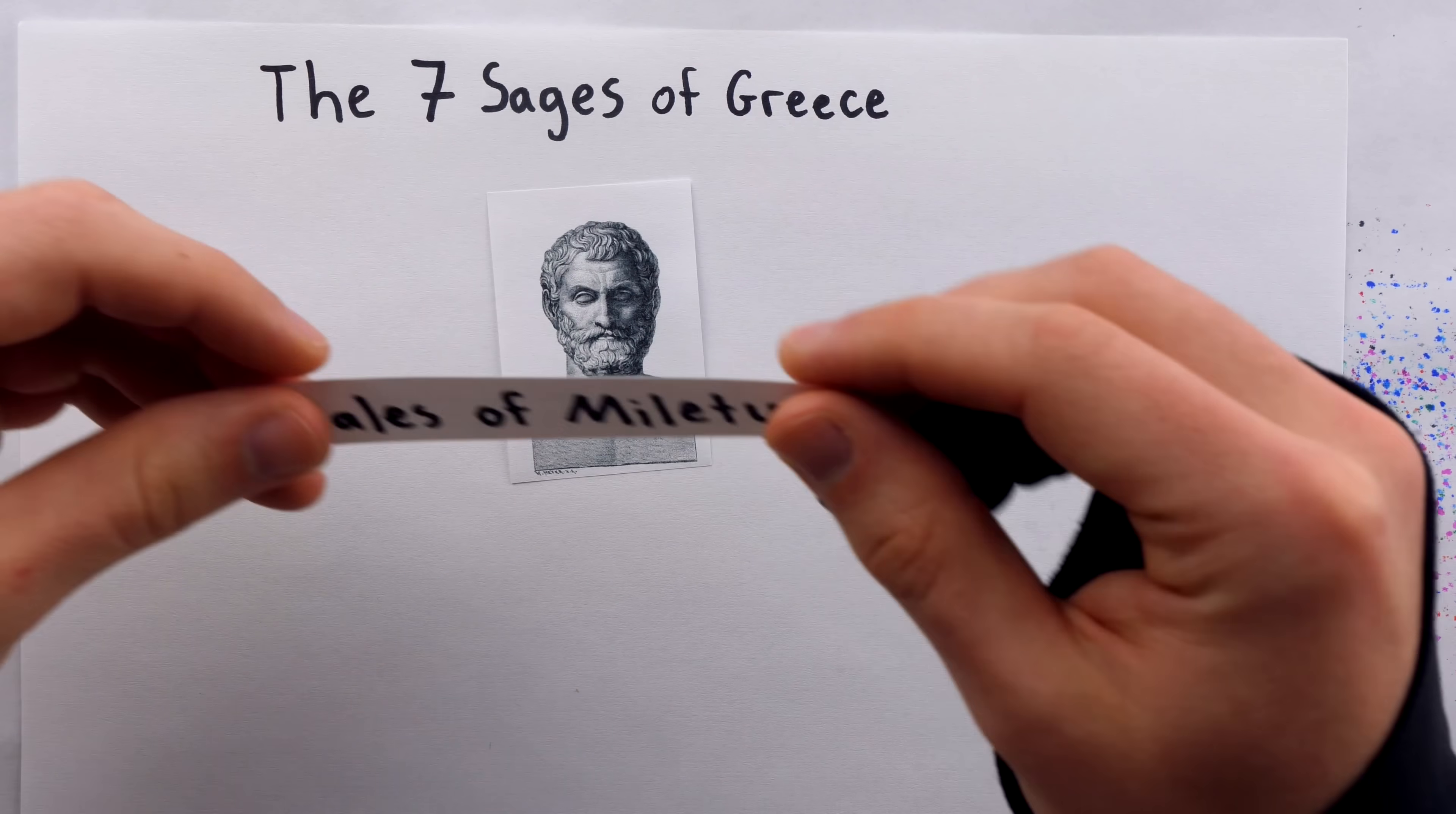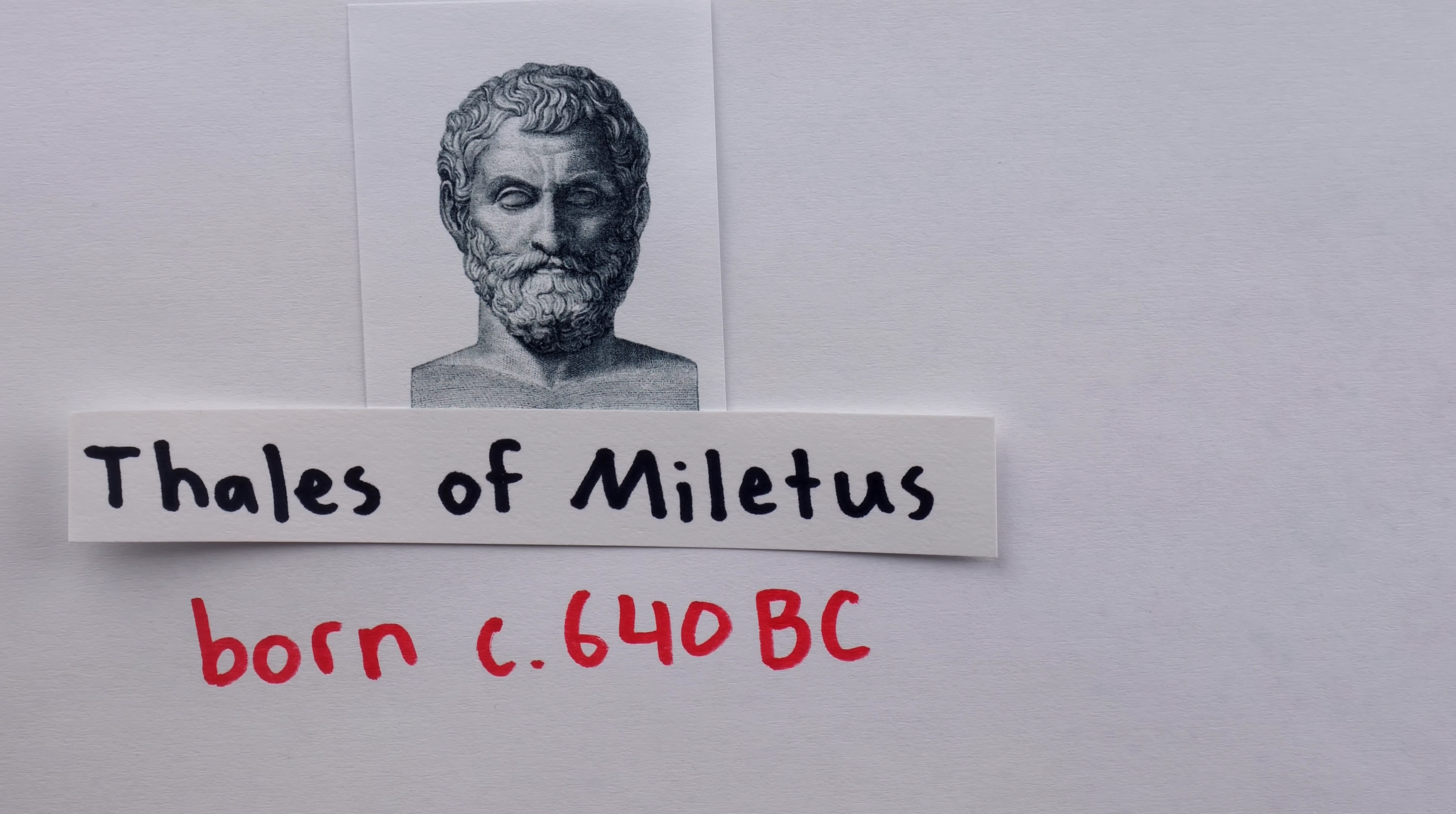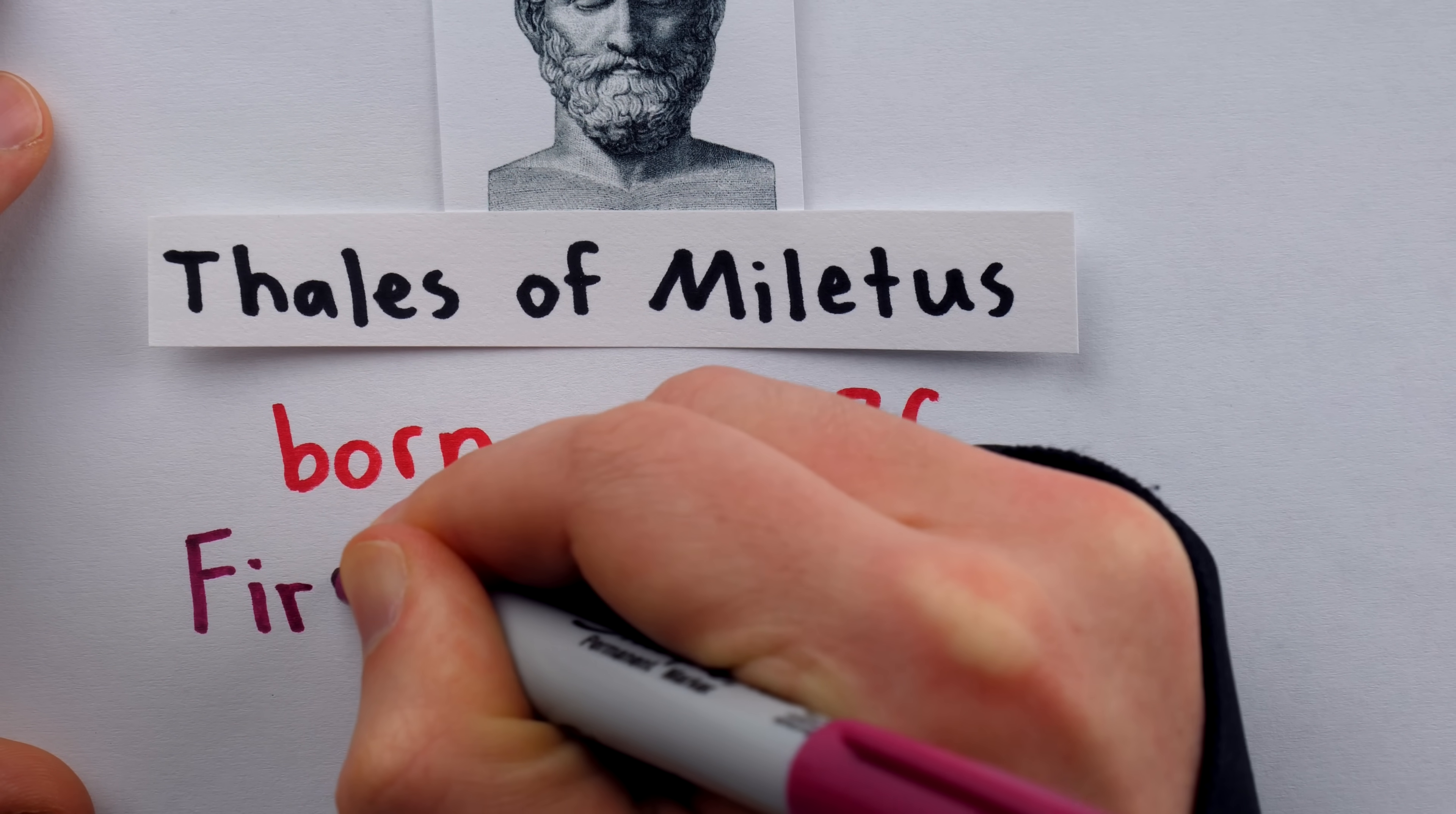And that was Thales of Miletus. He was born around 640 BC in Miletus. His city was on the western coast of Asia Minor, near what is today Aydin, Turkey. In his time, Thales earned fame as a philosopher and astronomer, but for us, he is most cool because he is regarded as the first mathematician.